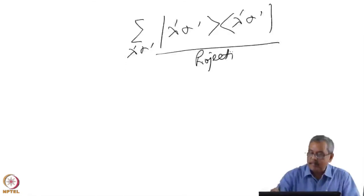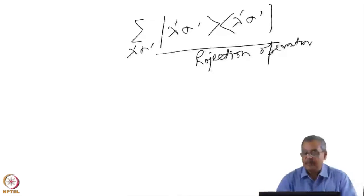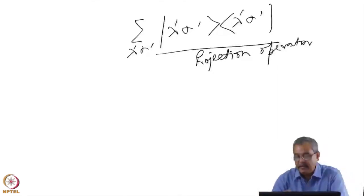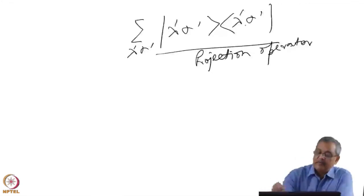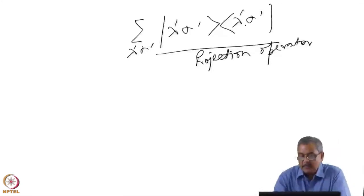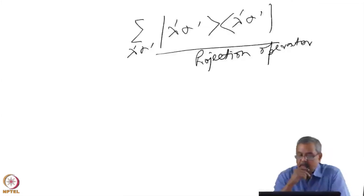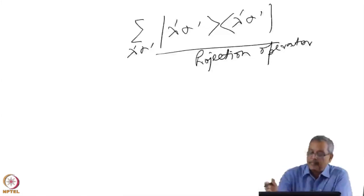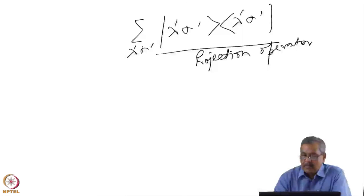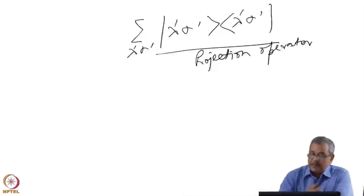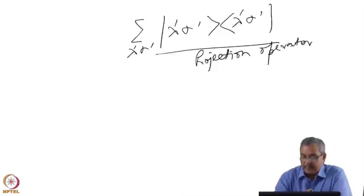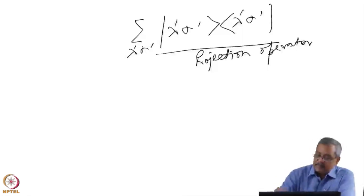Interestingly, I have a summation over lambda-prime sigma-prime times lambda-prime sigma-prime. What does this signify? In quantum mechanics this is known as a projection operator. These are all possible final states, so it is like a projection of the wave function into all the components in this lambda-sigma space.